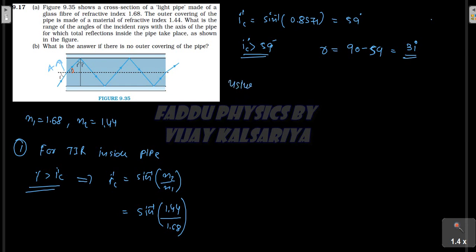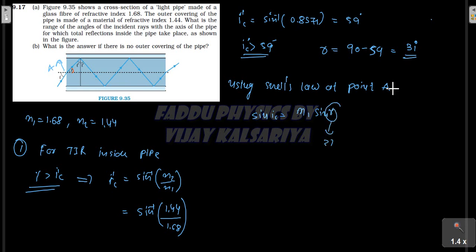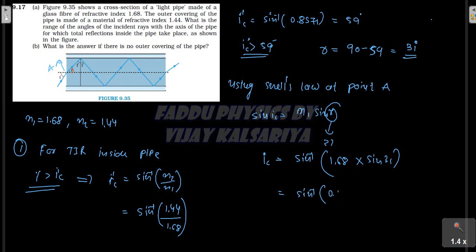Using Snell's law at point A, sine of i-C equals N1 times sine of R. With R equal to 31 degrees, sine i equals N1 times sine of 31, so sine i equals 1.68 times sine 31. After further simplification, sine i equals 1.68 into 0.5150, giving sine i equal to sine inverse of 0.8652.